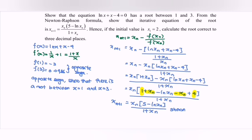Next, we substitute the initial value x_1 = 2. Then x_2 = 2[5 - ln 2]/(1 + 2). Using a calculator, x_2 = 2.871235.